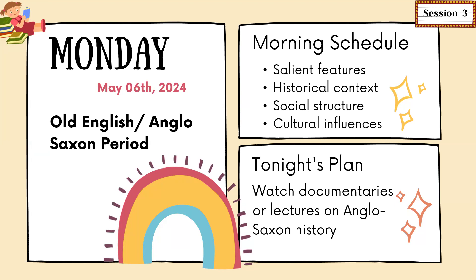It can be one hour, two hours, or half an hour — plan accordingly. Either complete or in-depth revision. In the evening, related to your available time, watch documentaries and videos related to the historical context of what you read or revised in the morning. This will give you more clarity.